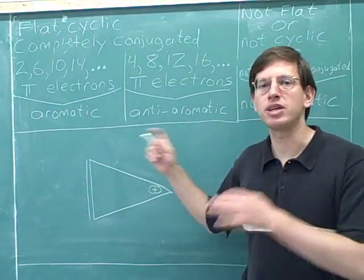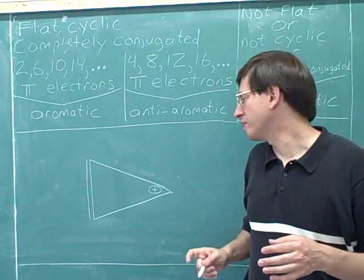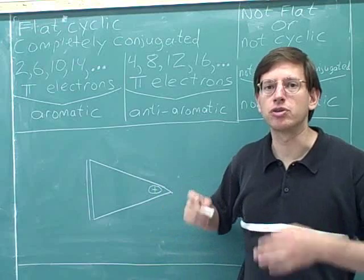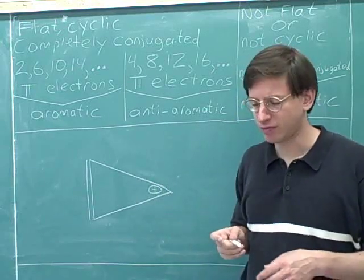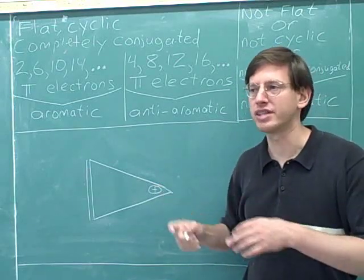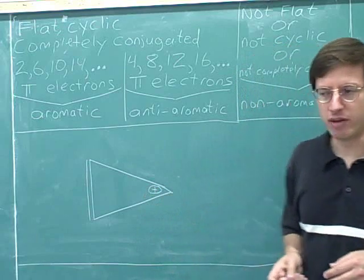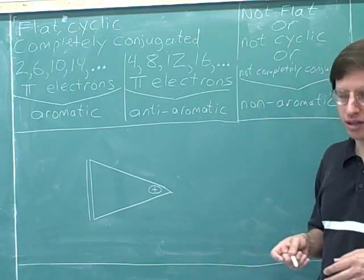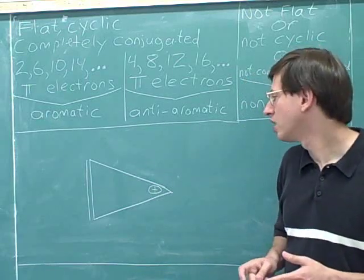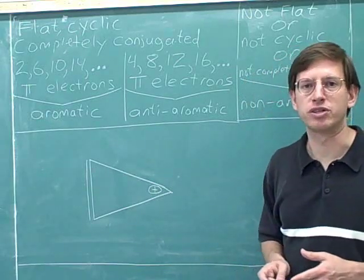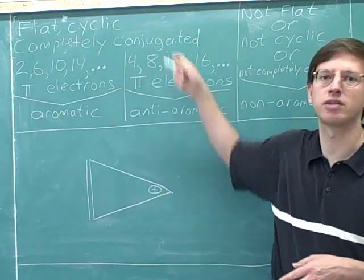Complete conjugation requires a P orbital at every atom in the ring, which really means all atoms should be sp2 hybridized. An sp2 hybridized atom has a P orbital on it. If any atoms in the ring are sp3 hybridized, the molecule cannot be completely conjugated, because an sp3 hybridized atom doesn't have any P orbitals. Well, all of these atoms are sp2 hybridized, so they all have P orbitals and this molecule is completely conjugated.